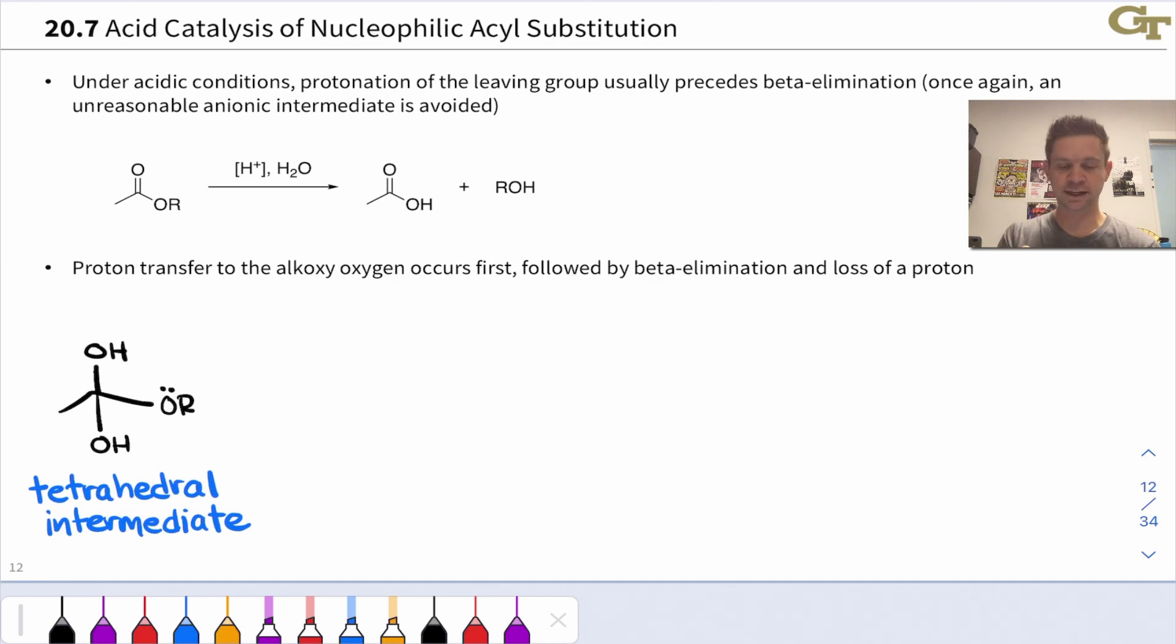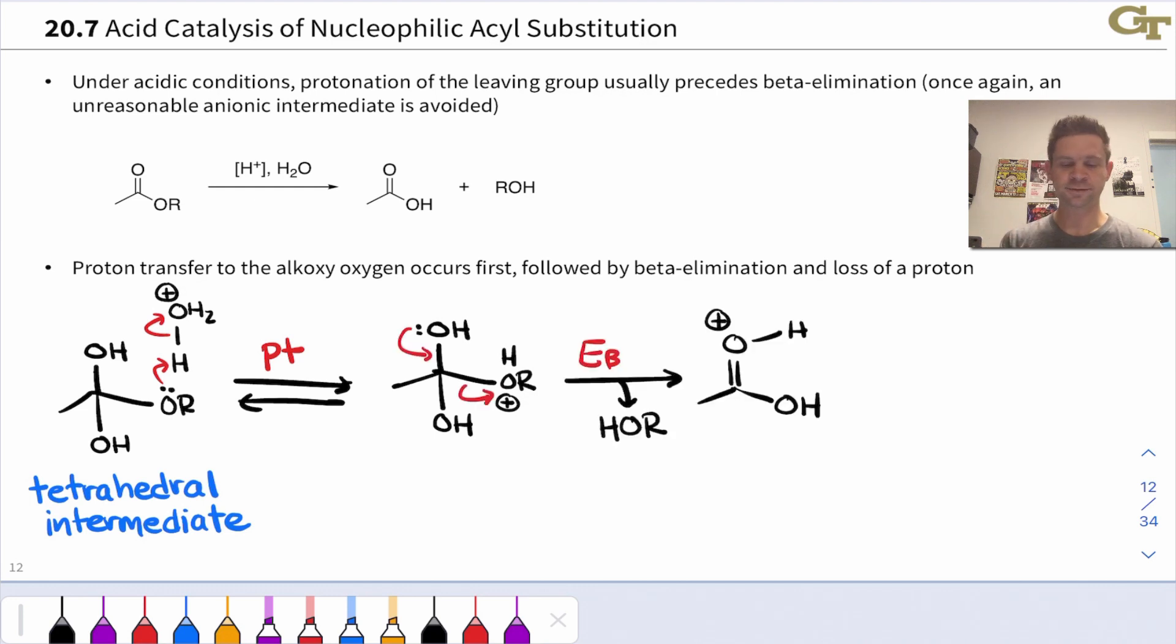and then a proton comes off to regenerate the catalyst and produce the neutral product. So the tetrahedral intermediate here is protonated at the OR group since that's going to ultimately be our leaving group. This creates a situation where beta elimination is now a lot more favorable since we're kicking off a positively charged HOR-plus group here. So beta elimination now occurs readily. This kicks off the alcohol product as a leaving group and leaves us with a protonated carboxylic acid, which is very close to the neutral carboxylic acid product.